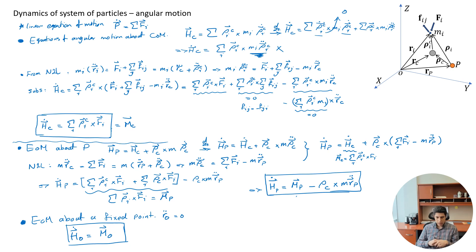So we have three versions: about center of mass, about a fixed point — both straightforward — or about an arbitrary accelerating point P where we must include the acceleration term. Okay, that is all for now. I have two more videos for this module. See you then.